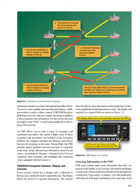An FMS allows you to enter a series of waypoints and instrument procedures that define a flight route. If these waypoints and procedures are included in the navigation database, the computer calculates the distances and courses between all waypoints in the route. During flight, the FMS provides precise guidance between each pair of waypoints in the route, along with real-time information about aircraft course, ground speed, distance, estimated time between waypoints, fuel consumed, and fuel/flight time remaining when equipped with fuel sensors.